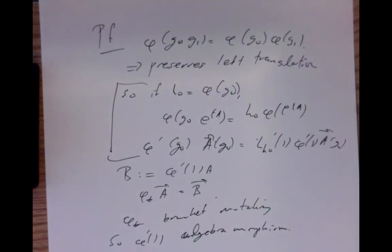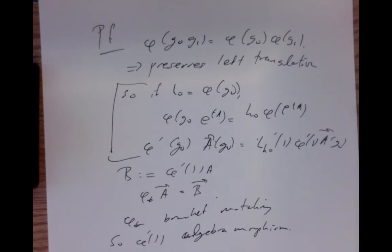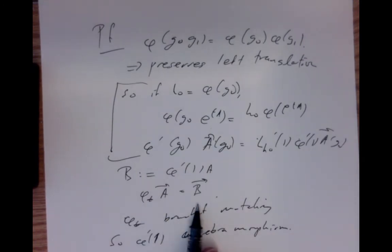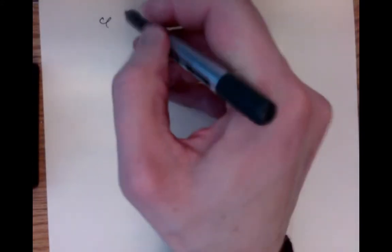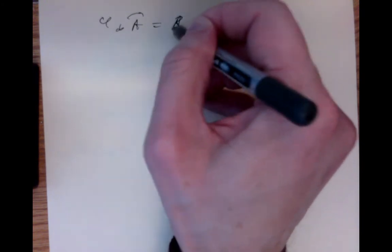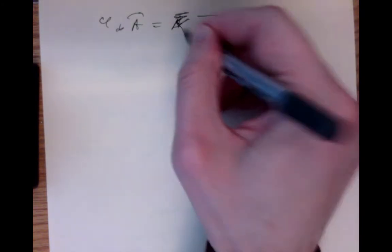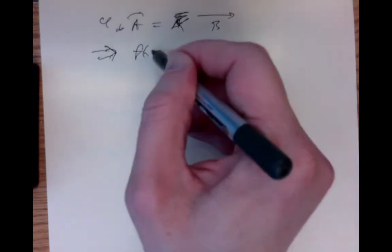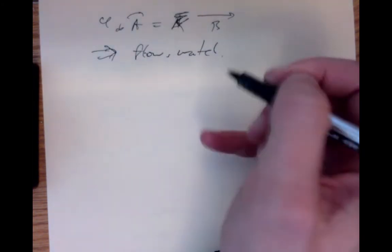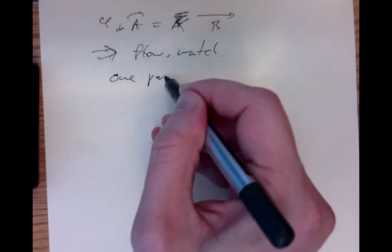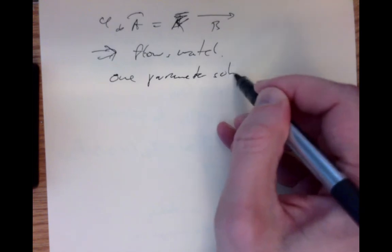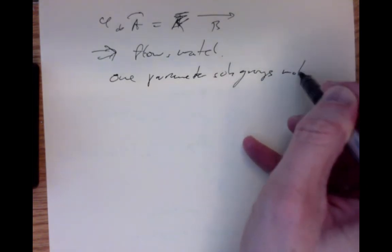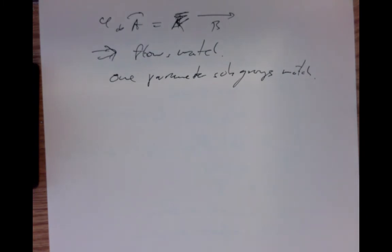One-parameter subgroups are matched up because the flows of vector fields are one-parameter subgroups: if φ* takes vector field A to vector field B, then the flows match, and so φ(e^{tA}) = e^{t·φ'(1)A}. If two morphisms φ₀ and φ₁ from G to H agree at the identity, then they match up on exponentials — they satisfy φ₀(e^{tA}) = φ₁(e^{tA}).